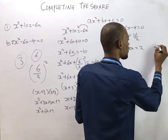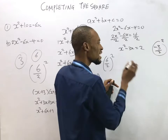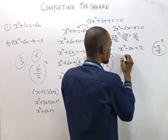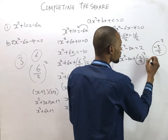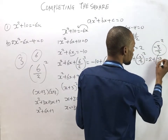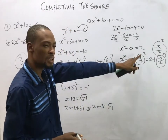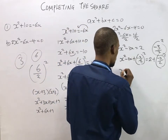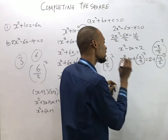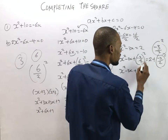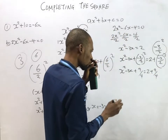Now the coefficient of s is -3. As usual, we divide it by 2 and square it, then add to both sides: s² - 3s + (-3/2)² = 2 + (-3/2)². Since 3 squared is 9, and 2 squared is 4, this gives: s² - 3s + 9/4 = 2 + 9/4 = 8/4 + 9/4 = 17/4.